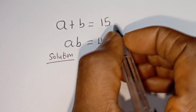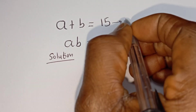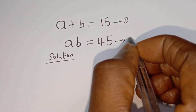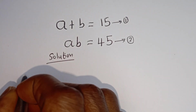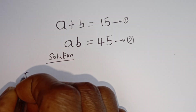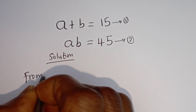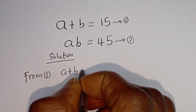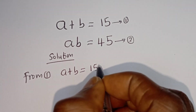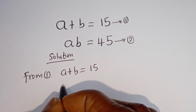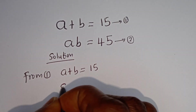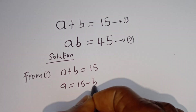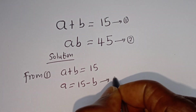Solution. A plus B is equal to 15 — let's call this equation 1. AB is equal to 45 — let's call this equation 2. Then from equation 1, let's make A the subject of the formula: A is equal to 15 minus B. Let's call this equation 3.